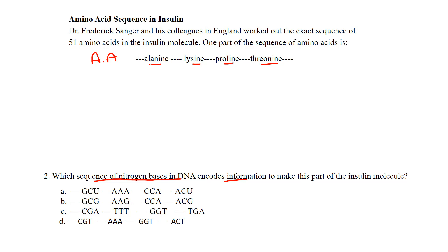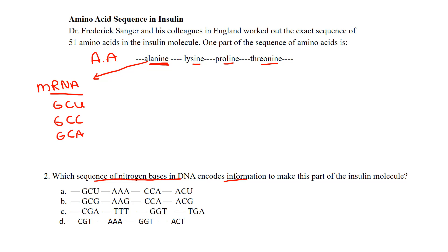So when we look at alanine — the first amino acid — we're going to go to messenger RNA and look at all the different codons that code for alanine. When we look at the messenger RNA, we see there are four of them: GCU, GCC, GCA, and GCG. Those are the four messenger RNA codons that code for alanine. That's redundancy — multiple codons coding for the same amino acid — so a silent point mutation would still code for the same amino acid.